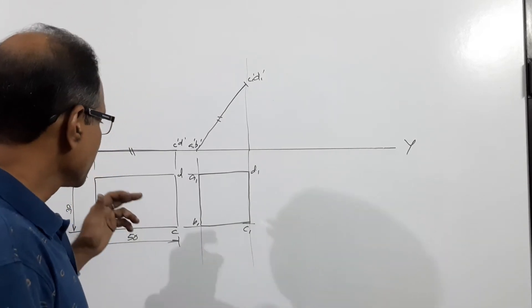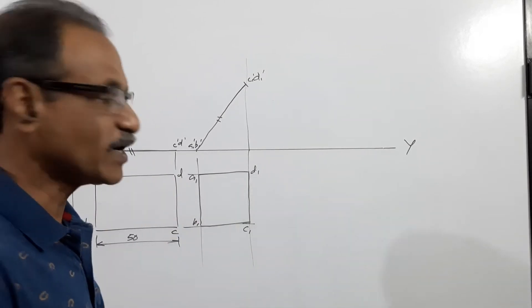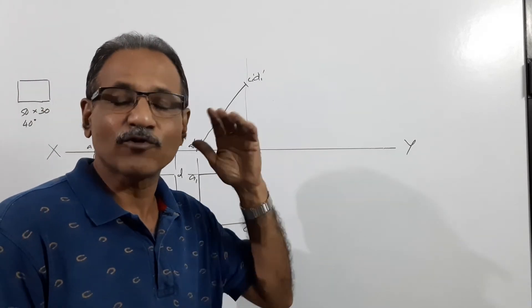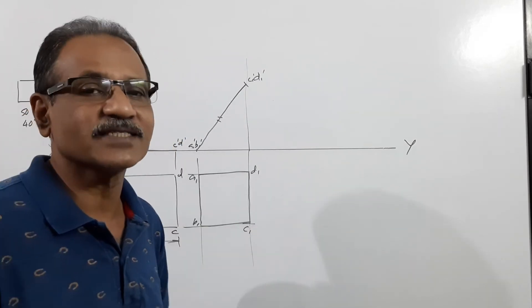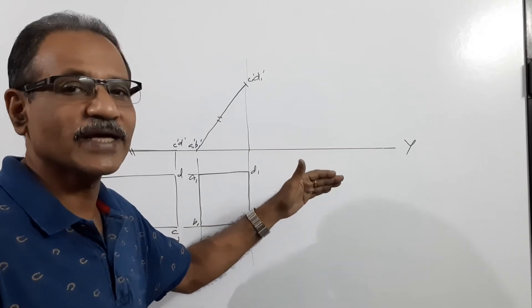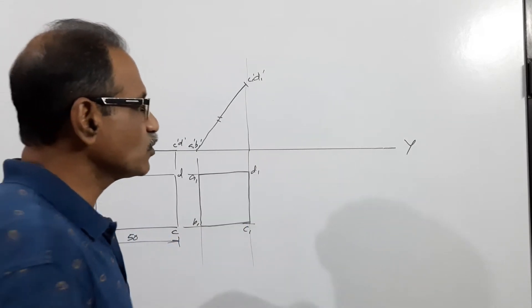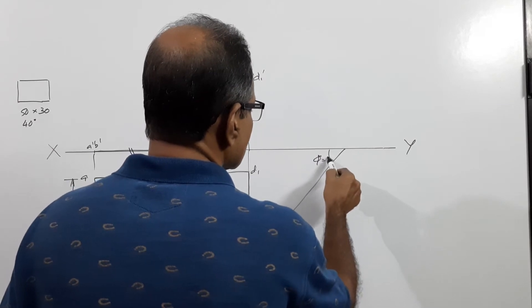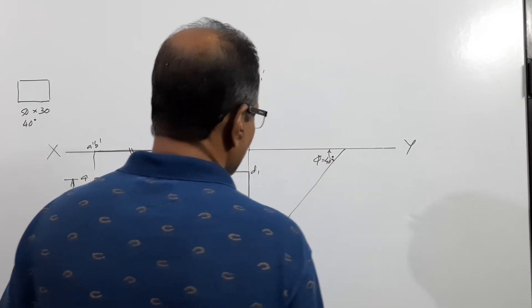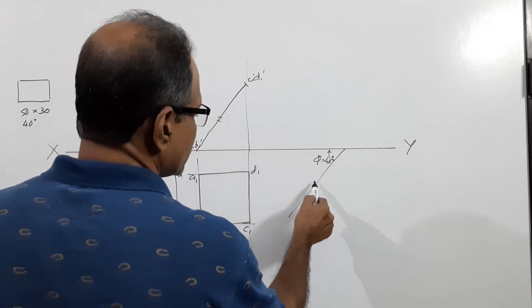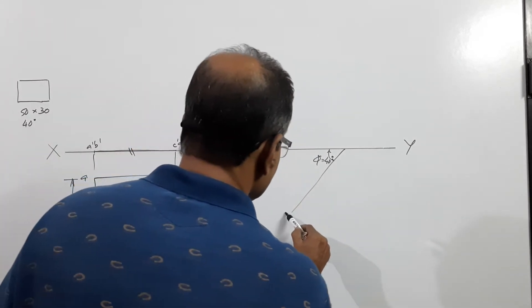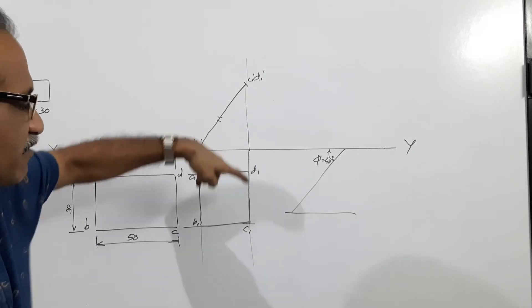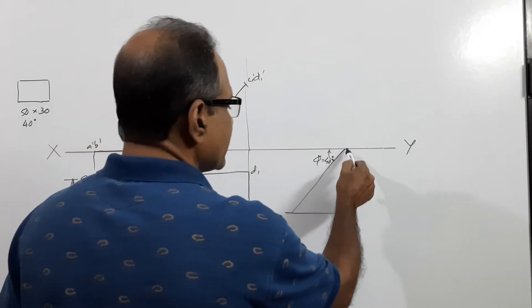Now what's the third condition? A larger side makes 40 degrees to VP. What's the larger side? AD is a larger side, BC is a larger side. Larger side has to make 40 degrees to VP. That means phi of the larger side is given. To redraw the plan, you have to get beta of the larger side. How do you find that? Take a point on XY line at 40 degrees, draw a line. Phi equals 40. Take 50 mm, the larger side, on this and draw a locus. Now take its plan length. The plan length of larger side is A1D1 or B1C1. Take that and this is a cutter, cut an arc.